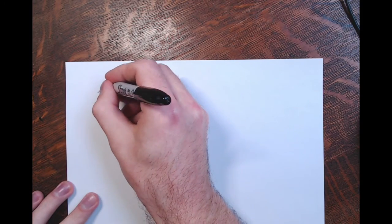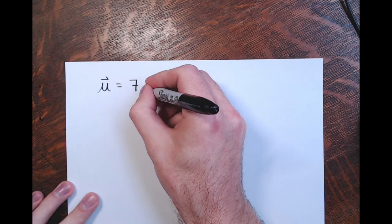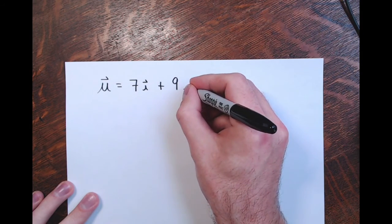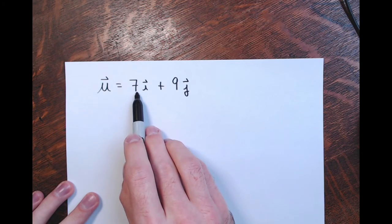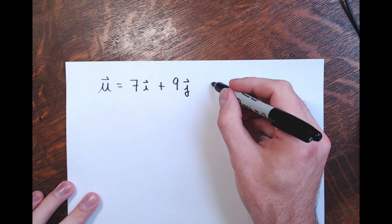So u is the vector 7 times vector i plus 9 times vector j. This would just mean right 7 units, up 9 units.